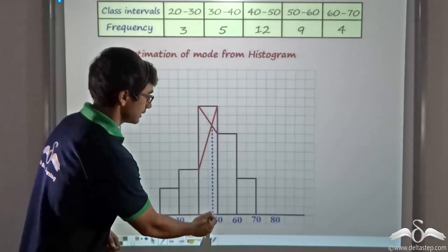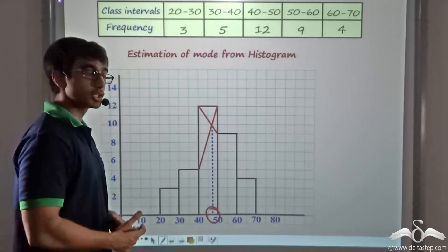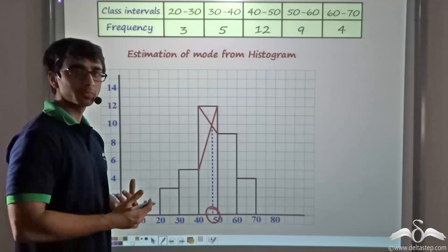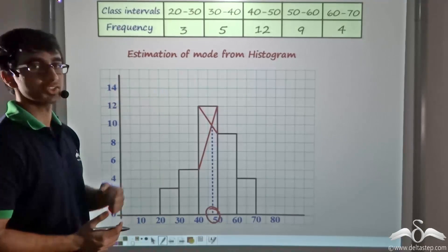As we saw, this point represented the mode and we found that it was equal to 48. Obviously, that would depend on the scale you have considered in drawing your histogram.